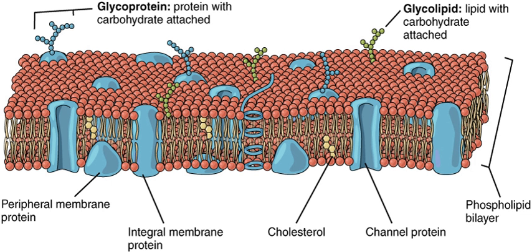Both the plasma membrane and internal membranes have cytosolic and exoplasmic faces. This orientation is maintained during membrane trafficking. Proteins, lipids, and glycoconjugates facing the lumen of the ER and Golgi get expressed on the extracellular side of the plasma membrane. In eukaryotic cells, new phospholipids are manufactured by enzymes bound to the part of the endoplasmic reticulum membrane that faces the cytosol.